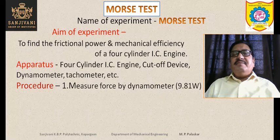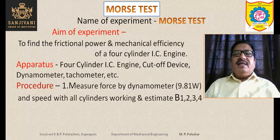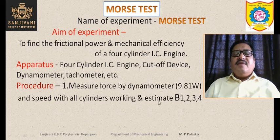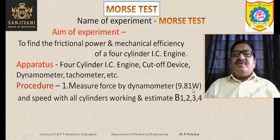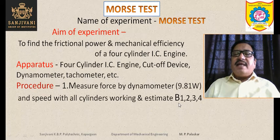The procedure involves measuring brake power by first measuring the force using a dynamometer. Force multiplied by radius gives torque, and torque multiplied by angular speed gives power. First, all cylinders are kept working; force and speed are measured to estimate the total brake power produced by all four cylinders, denoted as B1234.